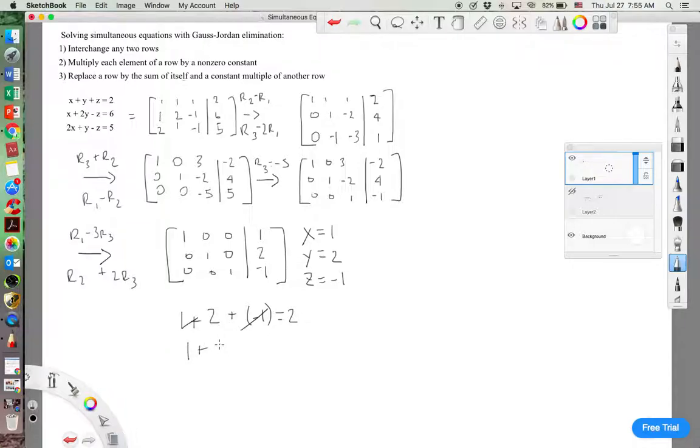Next, 1 plus 2 times 2, which is 4, minus a negative 1. 1 plus 4 is 5, plus 1 is 6. That checks out.